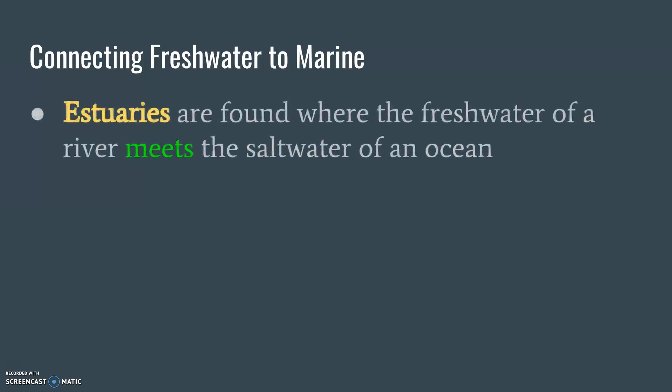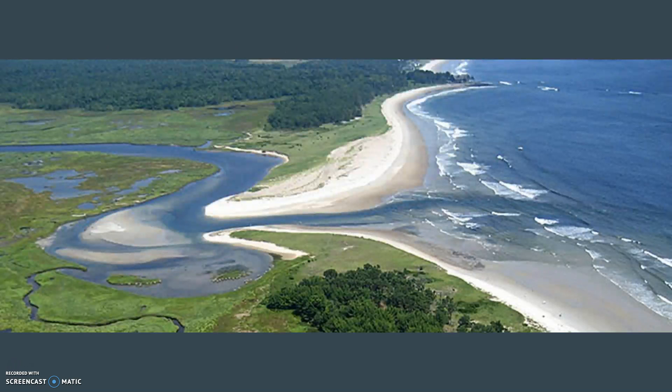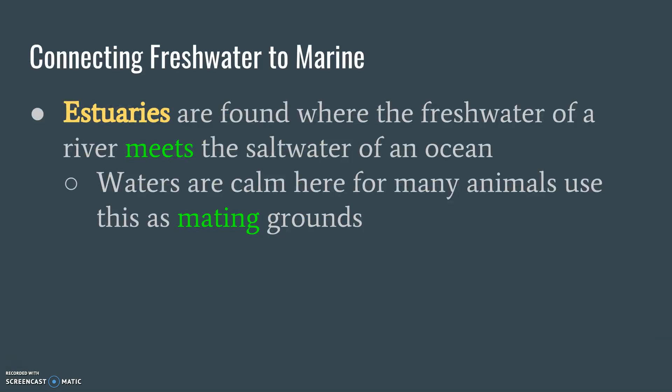We're connecting freshwater to marine life, because all water flows until it has nowhere else to flow to. This is where estuaries come in. Estuaries are where freshwater and saltwater meet — a river flows directly into the ocean. The water is very calm here — not wavy, not too fast-flowing.